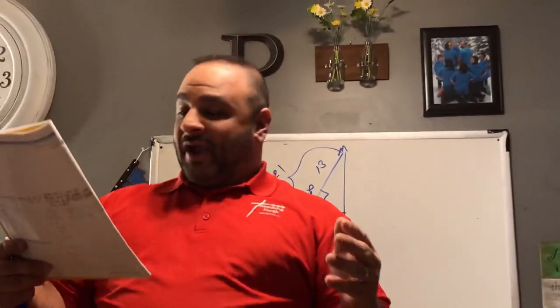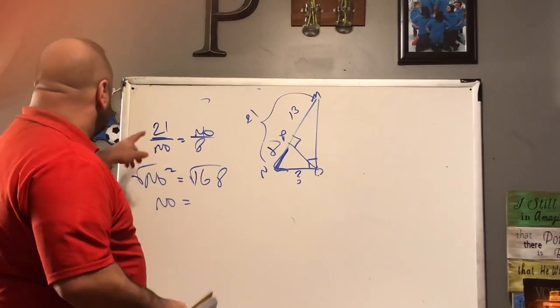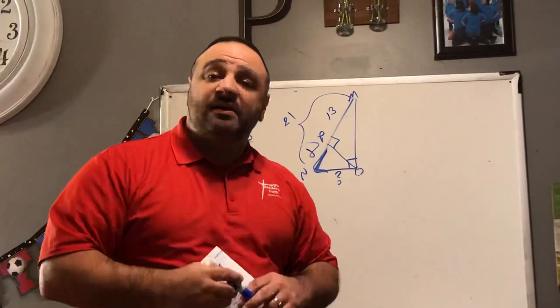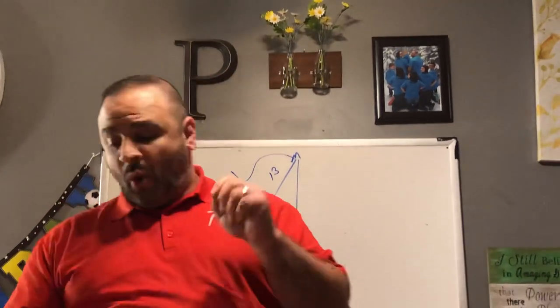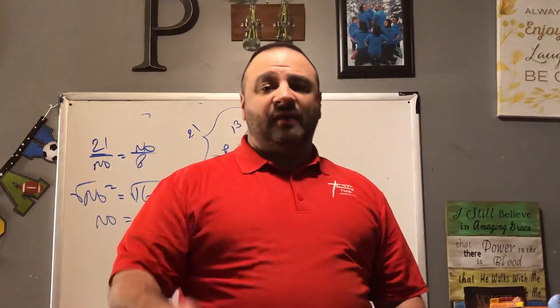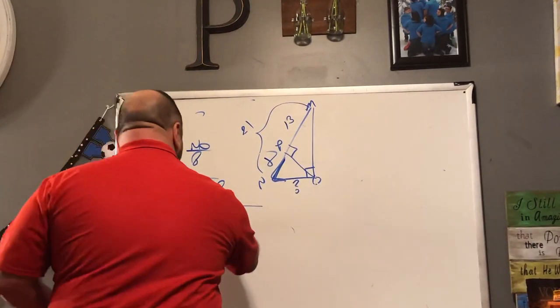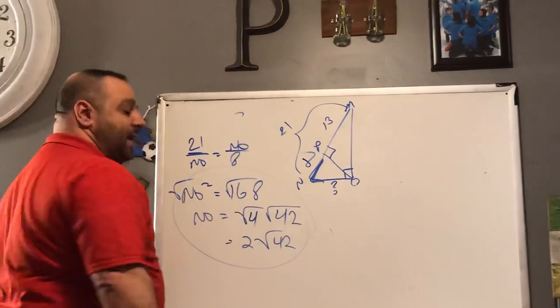Back to number 23: NO squared equals 168. We need to find the square root and simplify the radical. We look for two factors of 168 where one is a perfect square. Does 4 go into 168? Yes — 4 and 42. The square root of 4 is 2, so NO equals 2 times the square root of 42. That is the correct answer for number 23. Any further questions, refer to your quiz.